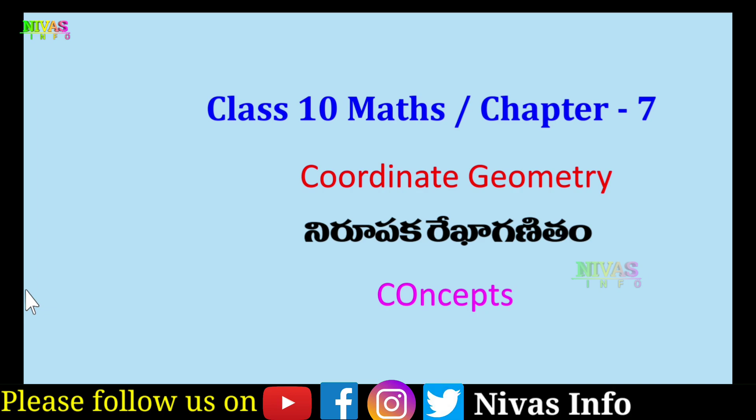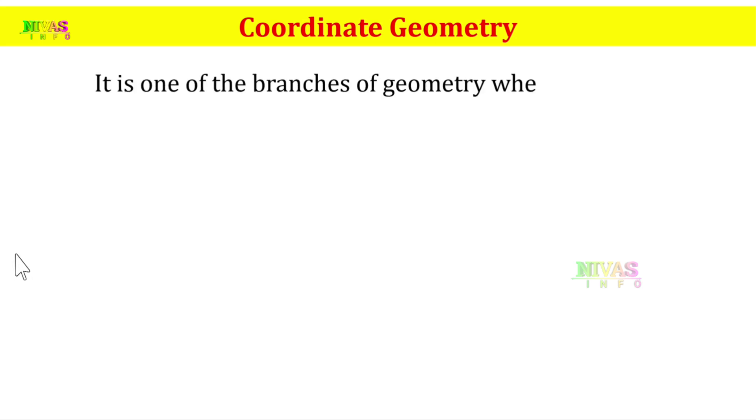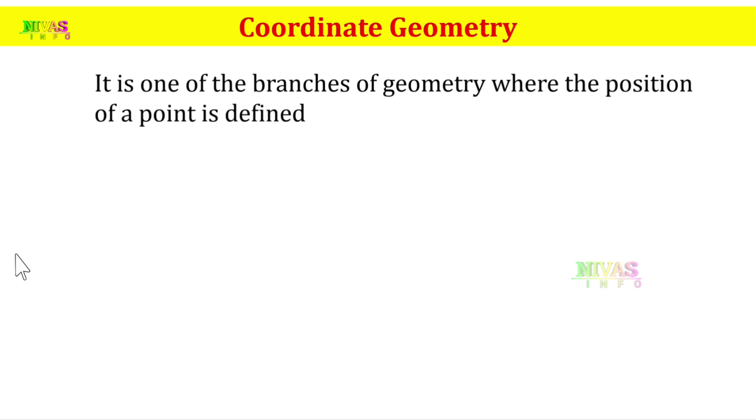What is Coordinate Geometry? Coordinate Geometry is a branch of geometry where the position of a point is defined using coordinates. If you have a graph paper, you can see a point in a position — that is Coordinate Geometry.